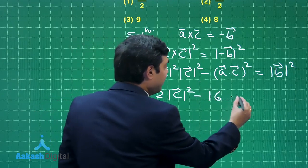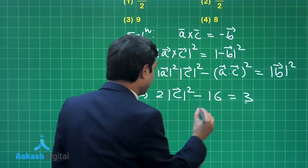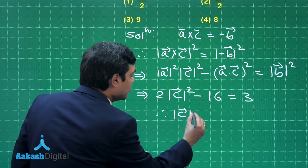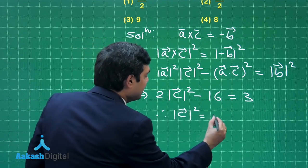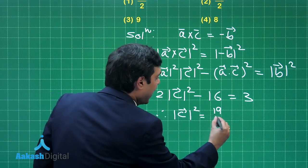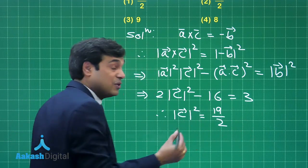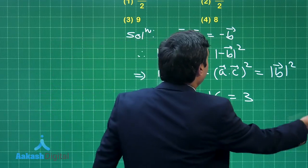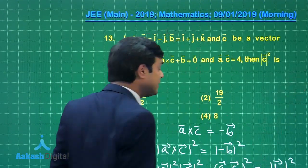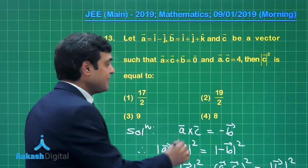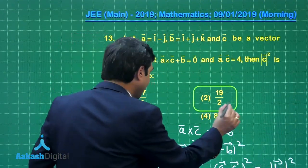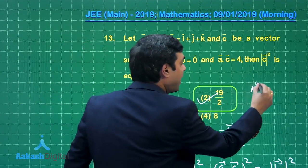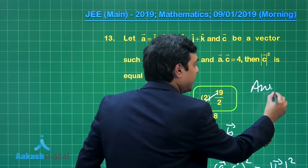Substituting: mod A squared is 2, times mod C squared, minus A dot C squared which is 16, equals 3. From here we get mod C squared equals 19 by 2 as the direct result. Checking the options, yes it is available as option number 2. Let us mark it as the correct answer.